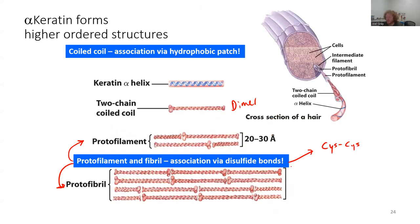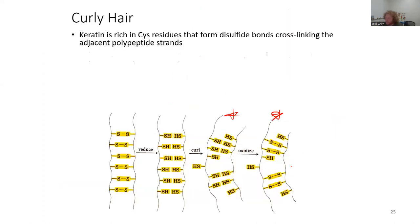A couple of the proteins I'm going to go through are just examples. I want you to know the hierarchy and organization of these proteins and the interactions that hold them together. We've got alpha helices held together through hydrophobic interactions, and these hydrophobic interactions of the dimers ultimately set the stage for disulfide bond formation between protofilaments and protofibrils.